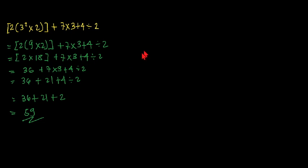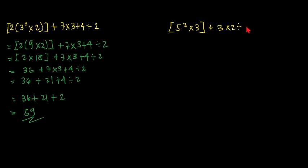We'll have another example. So we have 5 squared times 3, bracket, plus 3 times 2, divided by 6, another bracket, plus 5, times 3. So we have here two brackets, two groups. We will be simplifying each of these groups, and we also have a separate group of operations.